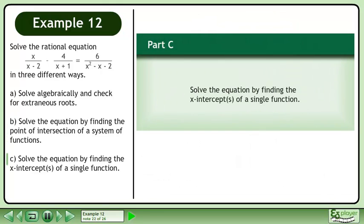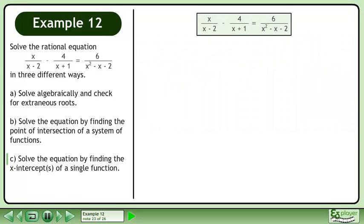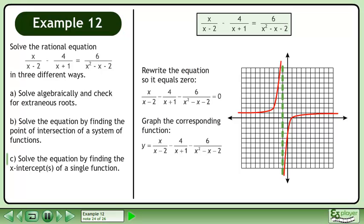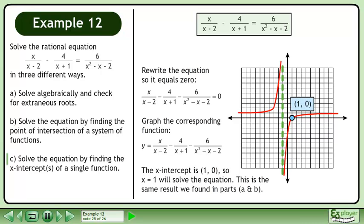In part C, solve the equation by finding the x-intercepts of a single function. We write the equation so it equals 0. Graph the corresponding function. The x-intercept is 1, 0, so x equals 1 will solve the equation. This is the same result we found in parts A and B.